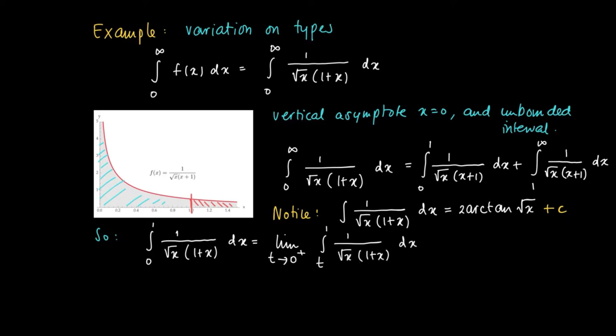Each integral from t to 1 can be evaluated by evaluating the primitive at the integration boundaries. We evaluate 2 arctan(√x) between t and 1. We get 2 arctan(1) minus 2 arctan(√t). The latter goes to 0, and arctan(1) equals π/4. So we get π/4 times 2 equals π/2.